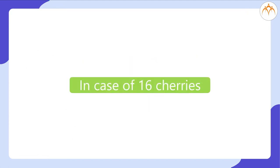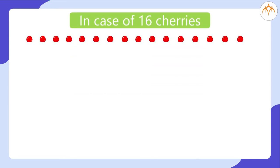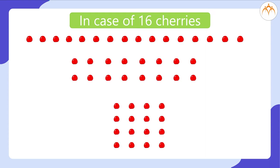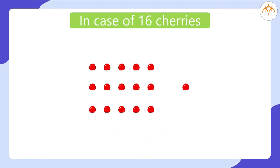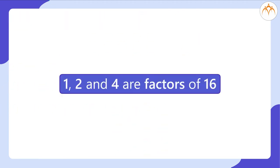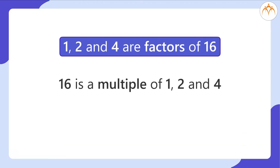In case of 16 cherries, we could arrange all 16 cherries in single row, 2 rows and 4 rows. But we could not arrange all 16 cherries in 3 rows. Hence, 1, 2 and 4 are factors of 16 and 16 is multiple of 1, 2 and 4 while 3 is not factor of 16.